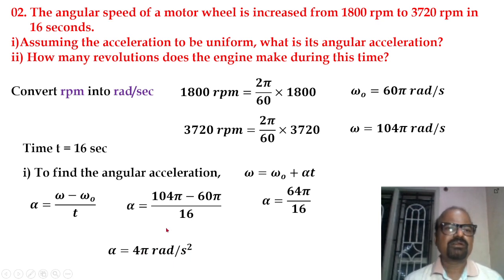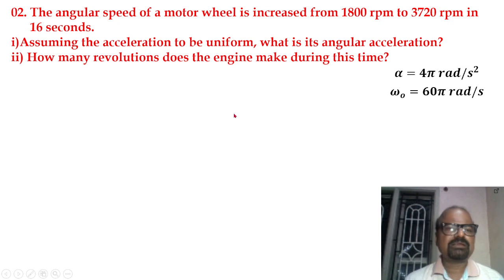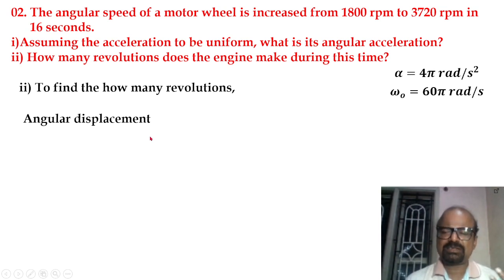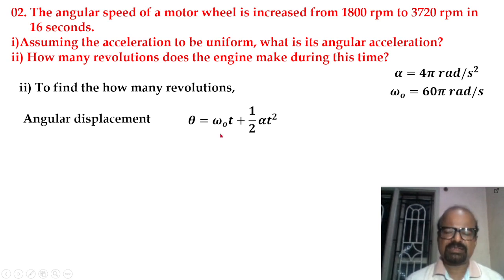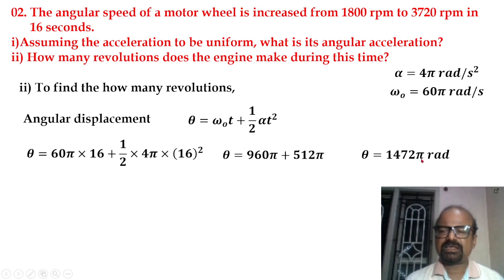Now we find how many revolutions the engine makes during this time, which requires angular displacement. Using theta = omega₀·t + half·alpha·t², substituting all values, we get theta equal to 1472.5 radians.